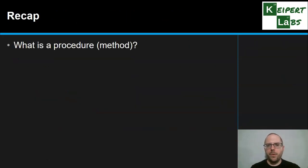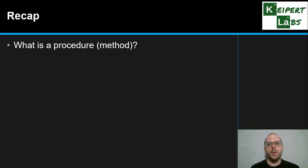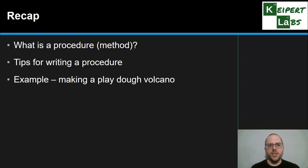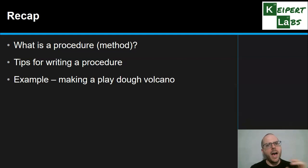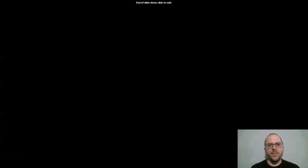So we looked at what is a procedure or method — a set of instructions to be followed to generate data, needing sufficient detail so someone else could follow it and get the same results. We looked at tips for writing a procedure, and used the Play-Doh volcano example to illustrate the difference between a poorly written method and a sufficiently detailed, high-quality method. Thanks very much for watching. Don't forget to like and subscribe. Bye for now.